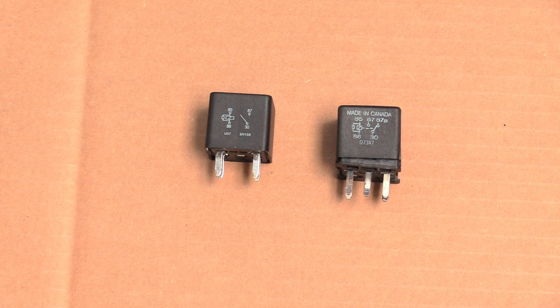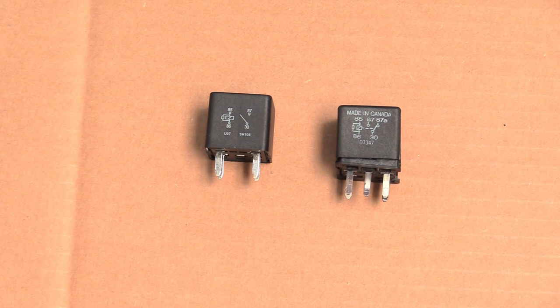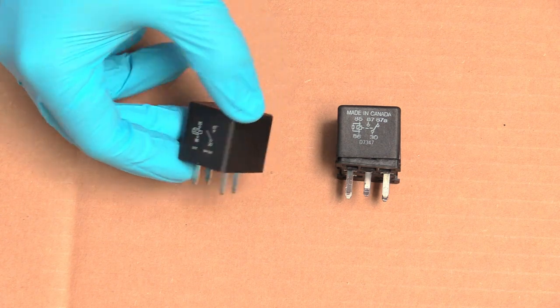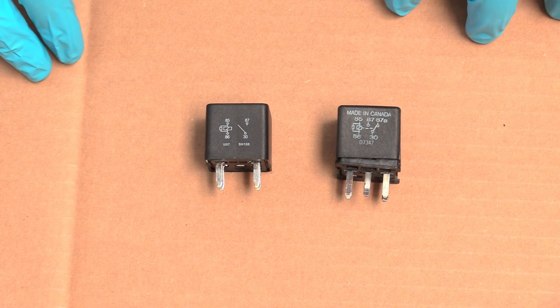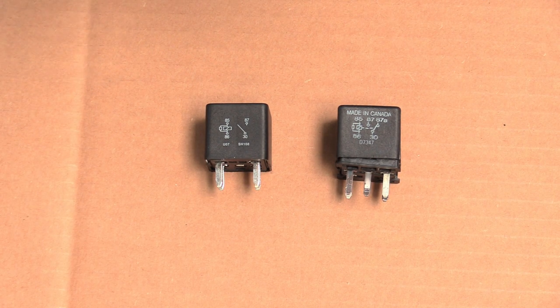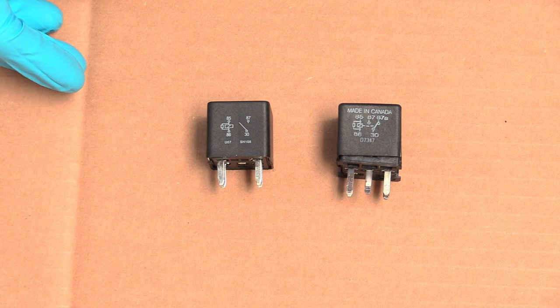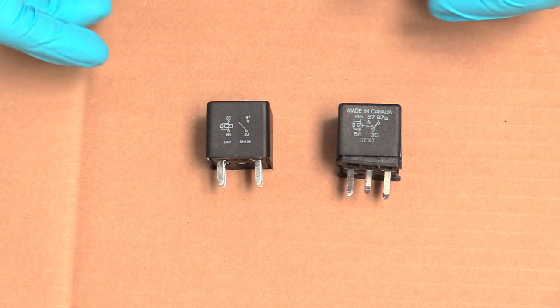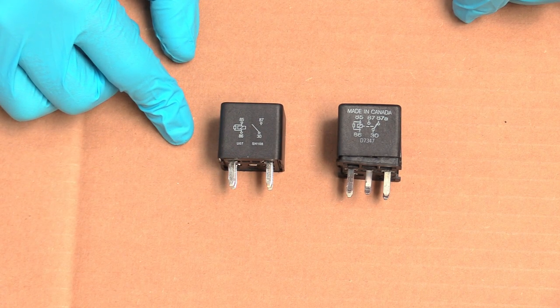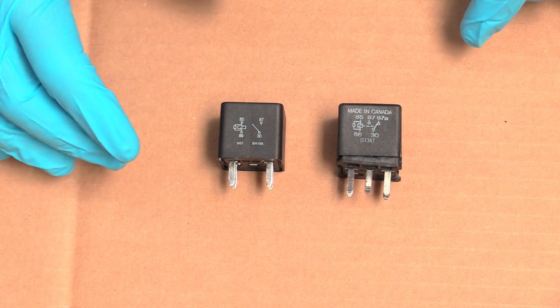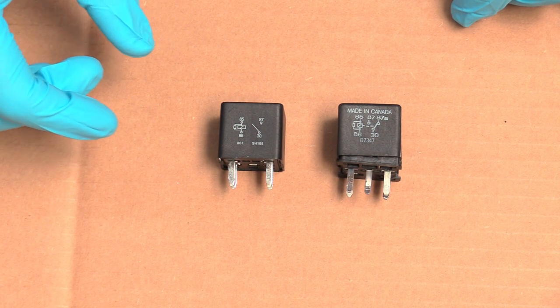So first we're going to go over why you would use a relay. Basically in an automobile, there are two types of electric circuit. There's a big draw circuit, which is what you'd use a relay for, and a little draw circuit about five amps or so. A little amp circuit is going to be something like interior lighting, something that doesn't require a huge amount of power.